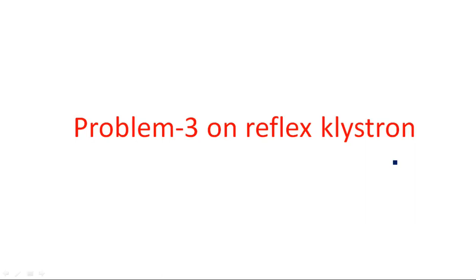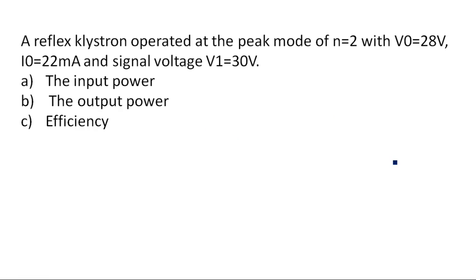In this video I am going to explain the third problem, which is used to calculate the input power, output power, and efficiency. A reflex klystron is operated at a peak mode of n equal to 2. V0 is equal to 280 volts, I0 is equal to 22 milliamperes, and signal voltage V1 is equal to 30 volts. Using these values we need to calculate input power, output power, and efficiency.